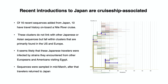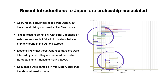In updates for Asia, the recent introductions to Japan are cruise ship-associated. Of the 16 recent sequences added from Japan, 10 have travel history on board a Nile River cruise. After being diagnosed and sampled in Japan, all 16 sequences divide between two clusters. Interestingly, these clusters do not link with other Japanese or Asian sequences, but fall within clusters that are primarily found in the US and Europe.